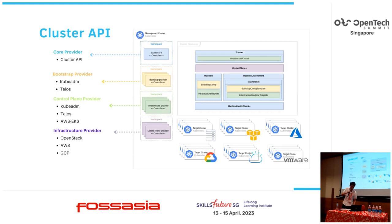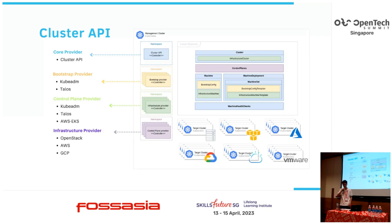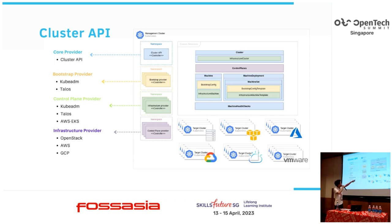Cluster API includes custom resource definitions. Custom resource definitions are a built-in resource that lets you extend the Kubernetes API. The Cluster API provider can provide and rely on some custom resource definitions, such as Machine, MachineSets, and MachineDeployment.